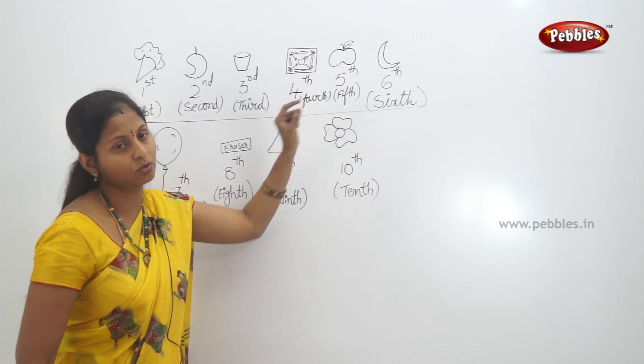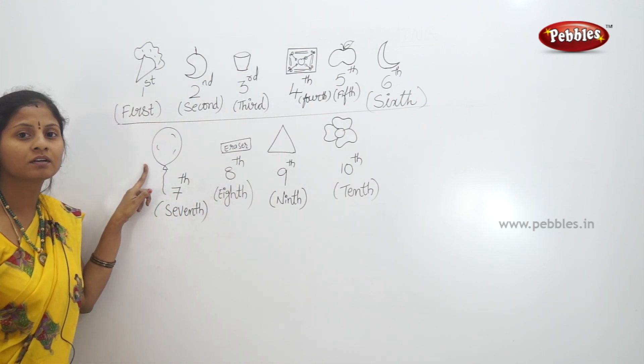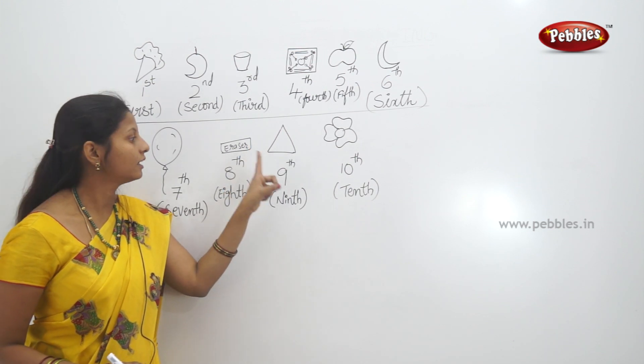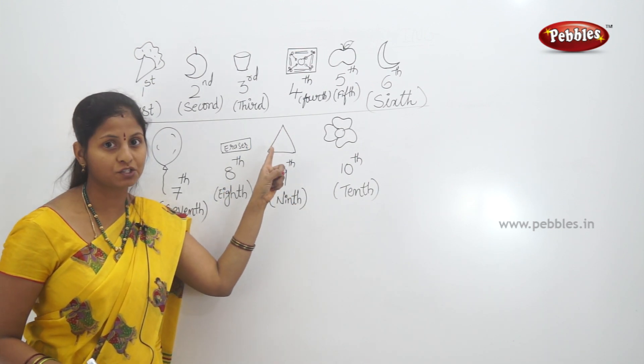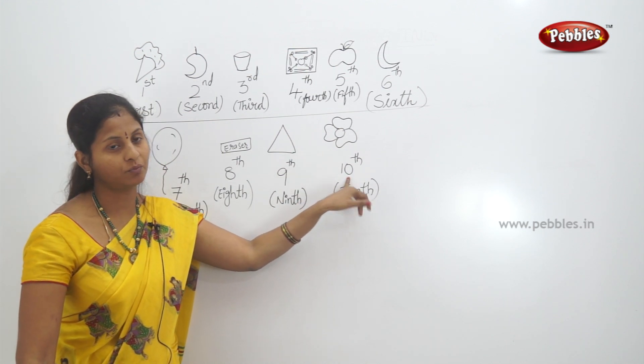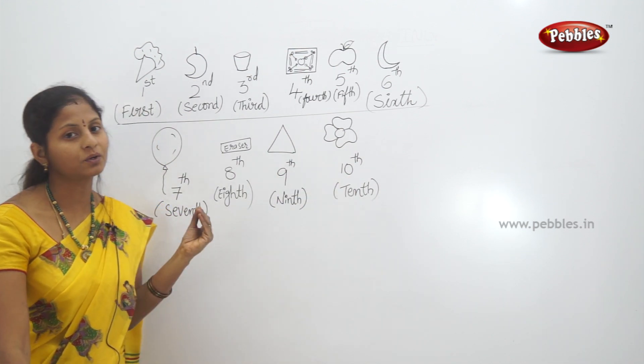Sixth place, below seventh position, eighth position, ninth position triangle shape, flower at tenth position. This is the cardinal and ordinal numbers example. If you enjoyed this video, click the like button. If you want to subscribe to this channel, please click the subscribe button and leave a comment.